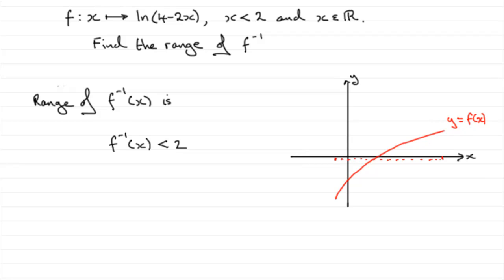Now the inverse function f to the minus 1 of x is related to this graph. It is a reflection in the line y equals x. So if this was the line y equals x, the diagonal through here, we would expect to see the inverse function look something like this coming up like that. This would be y equals f to the minus 1 of x.